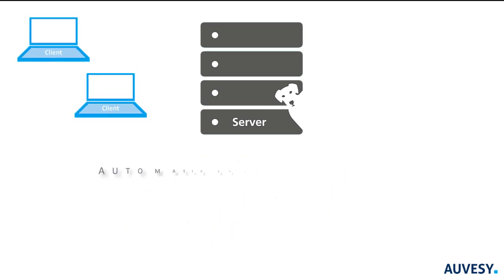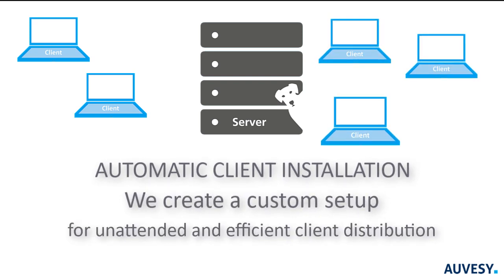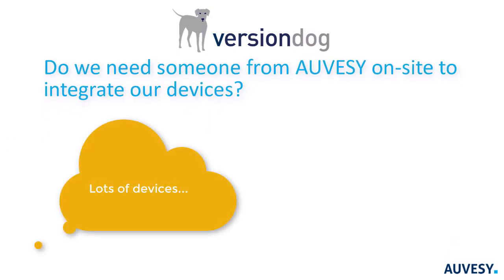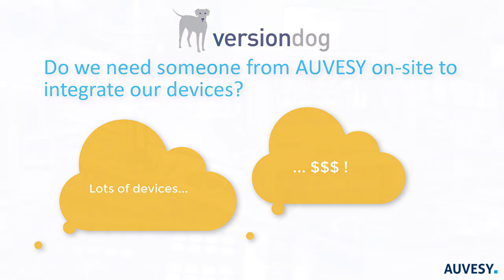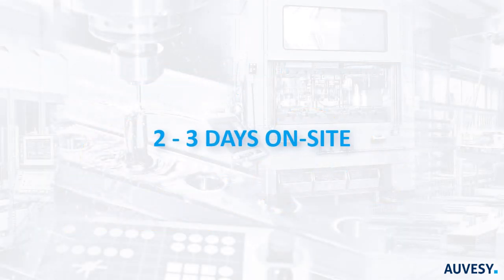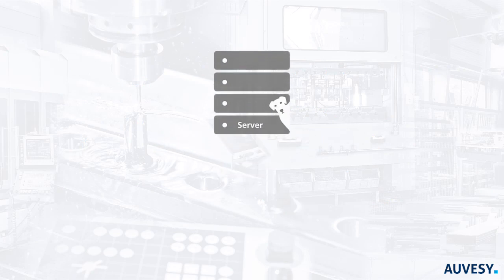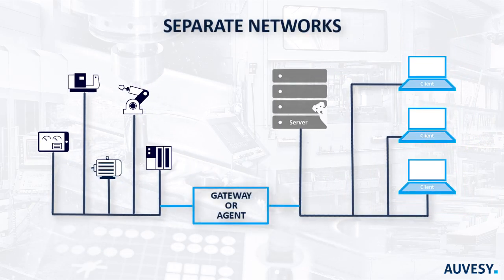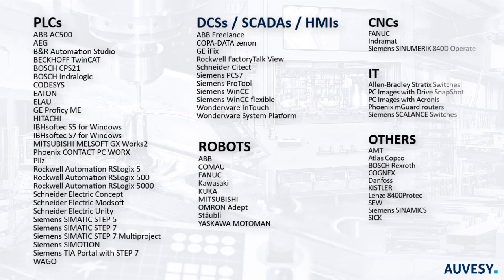But the majority of customers request on-site assistance with installation and follow on straight away with device integration. Do we need someone from VAZ on-site to integrate our devices? We have a lot of devices — this could be expensive. Most customers decide on a two- or three-day on-site visit from a VAZ system integrator. You'll need to learn how the VersionDog system is integrated into the network structure and how connections are established to devices. It is far more efficient to get immediate answers and first-hand demonstrations, particularly when dealing with more complex engineering frameworks such as TIA Portal and CODESYS.